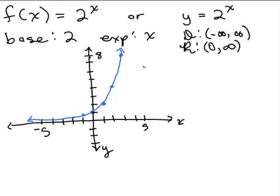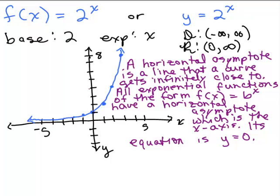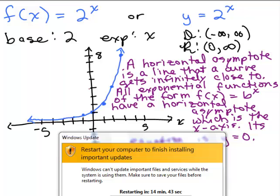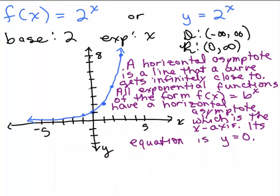A horizontal asymptote is a line that a curve gets infinitely close to. All exponential functions of this form — f of x equals b to the x, or y equals b to the x — all have a horizontal asymptote. In fact, that horizontal asymptote is the x-axis, the line that it gets infinitely close to. It has an equation: the equation of the x-axis is y equals 0, because all the ordered pairs on that line have a y-coordinate of 0.